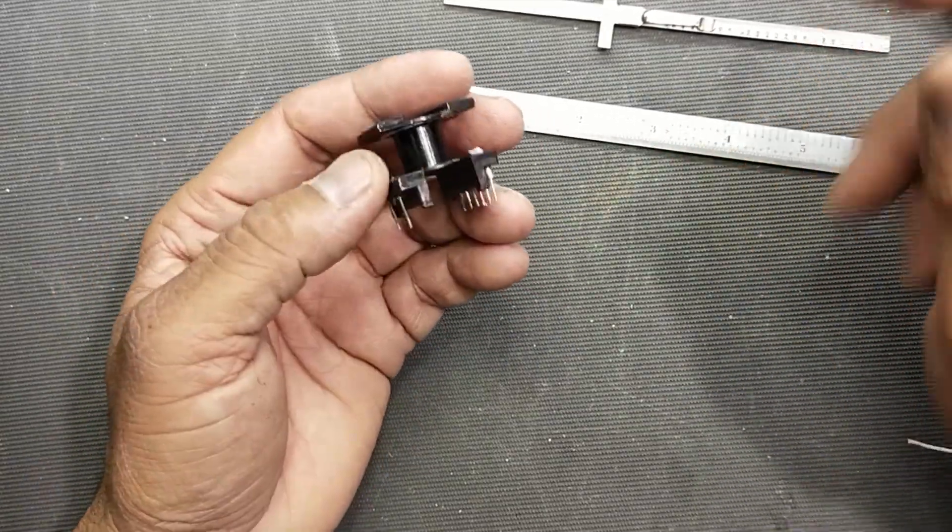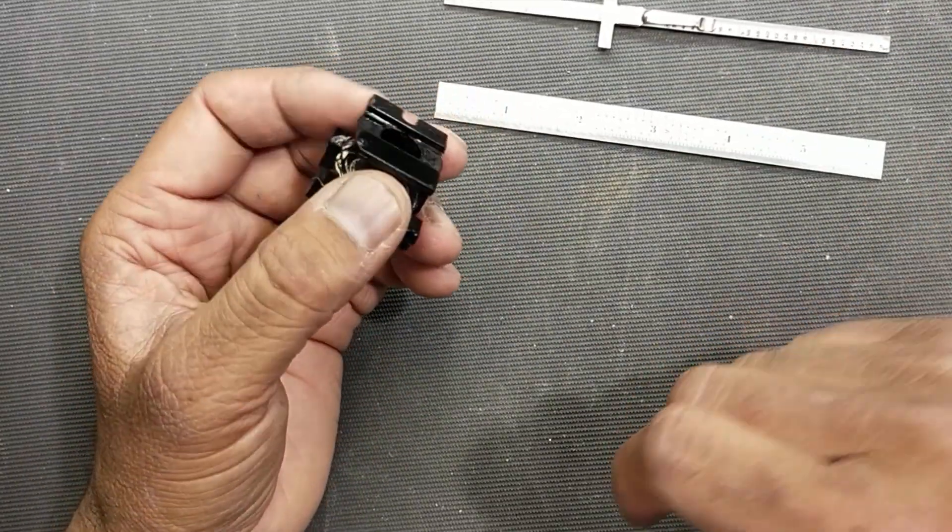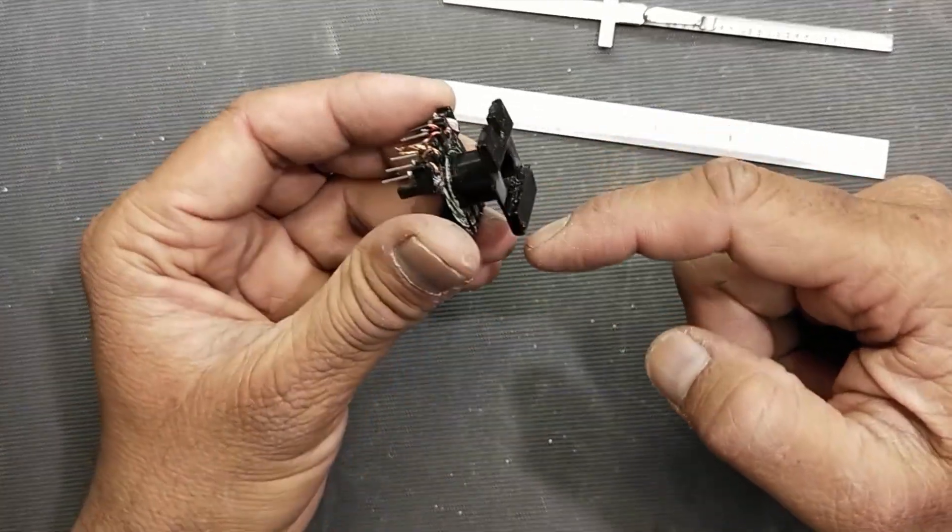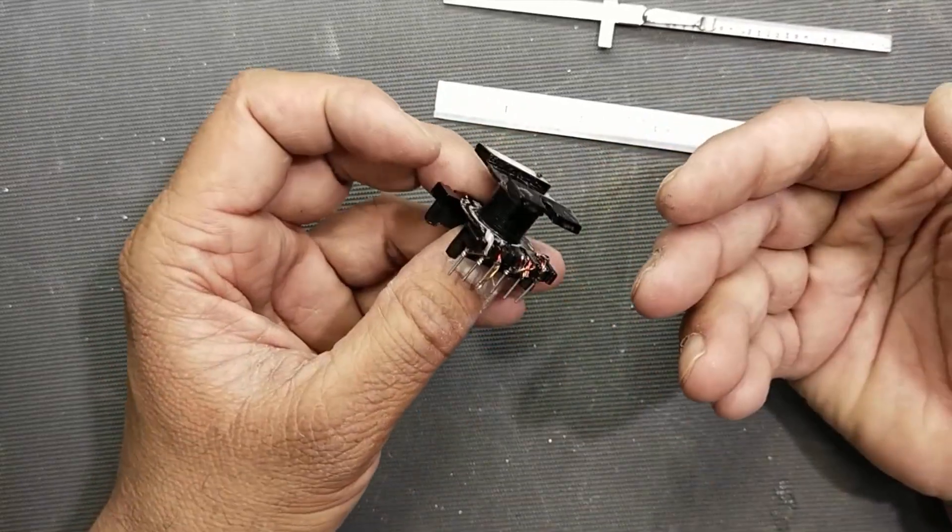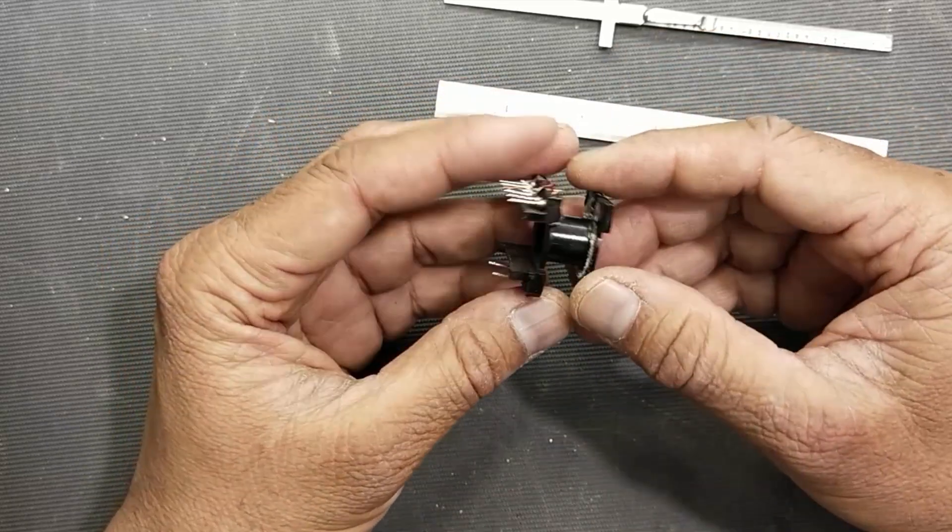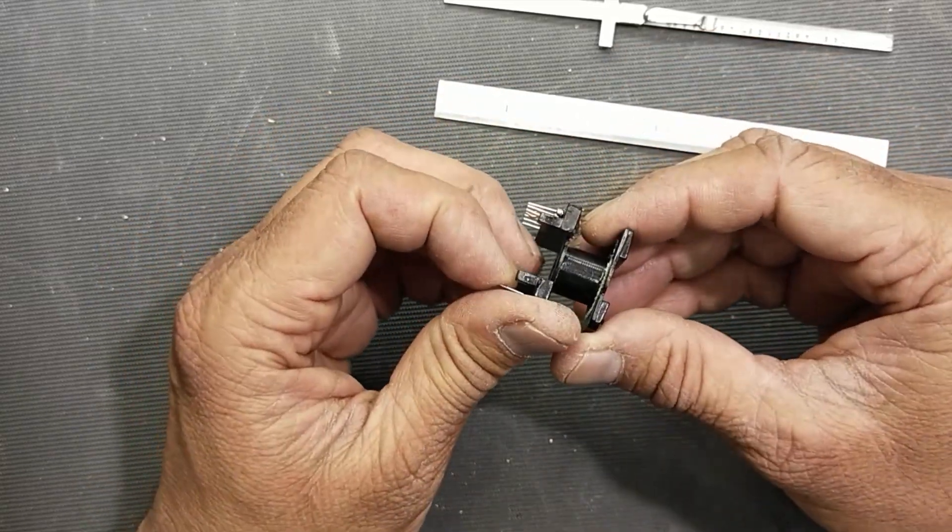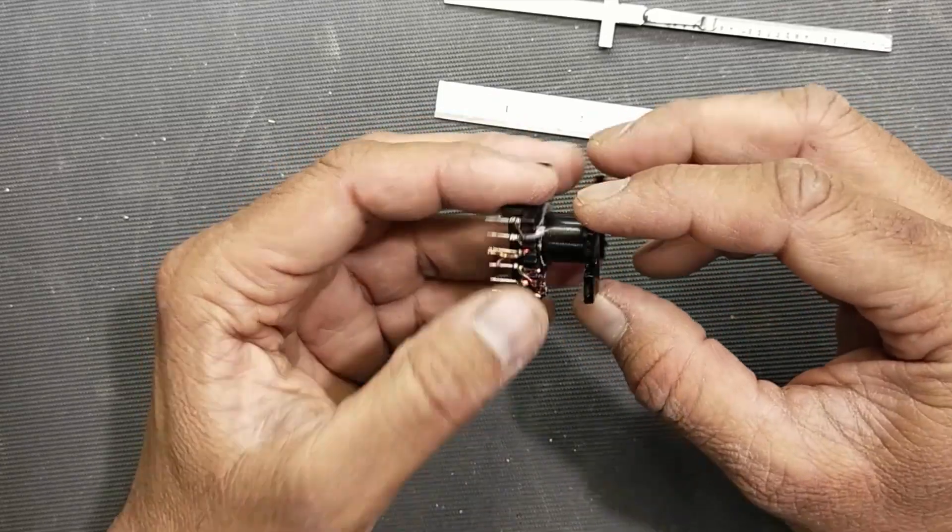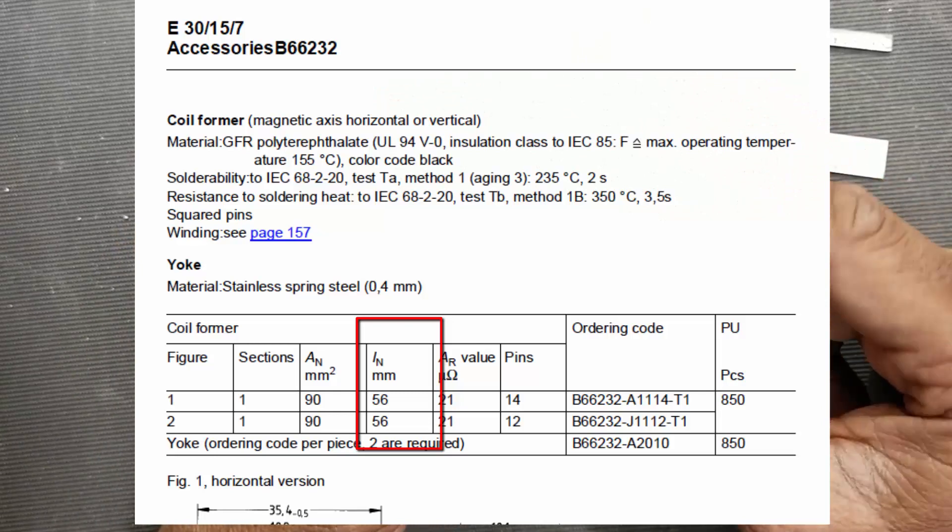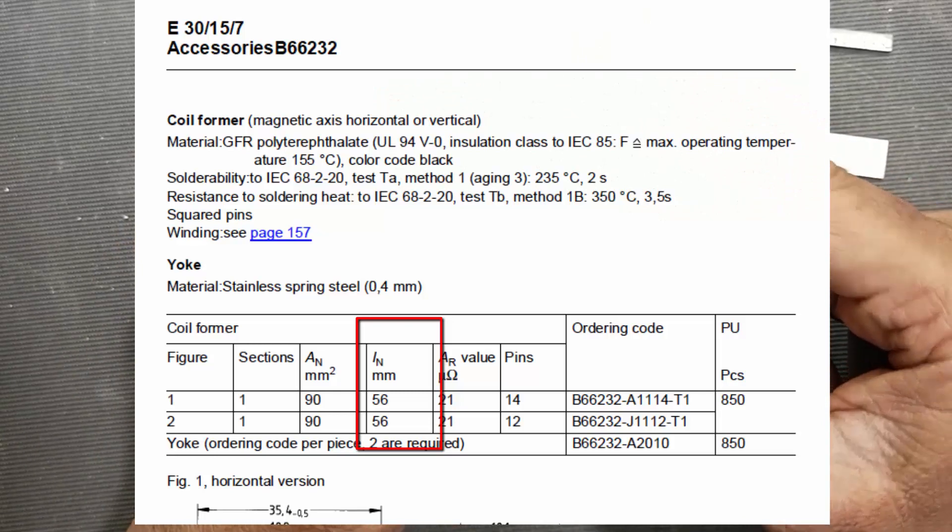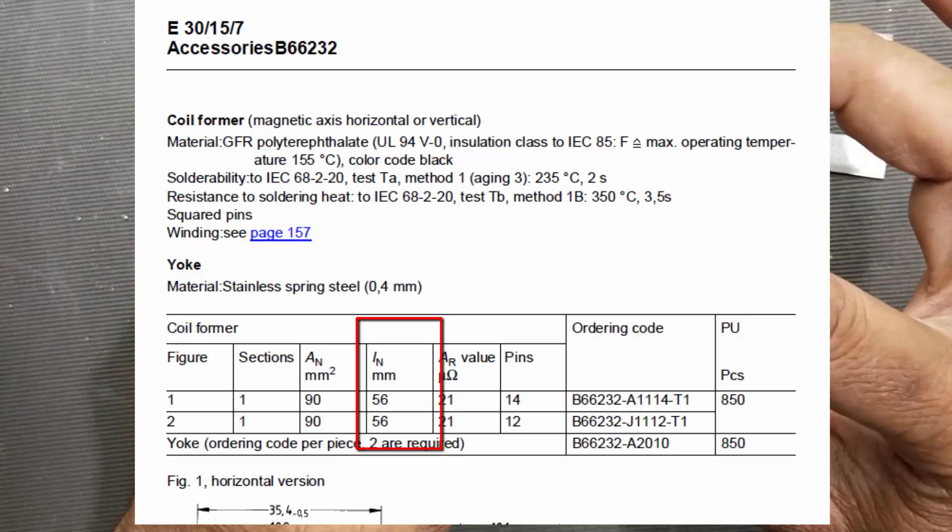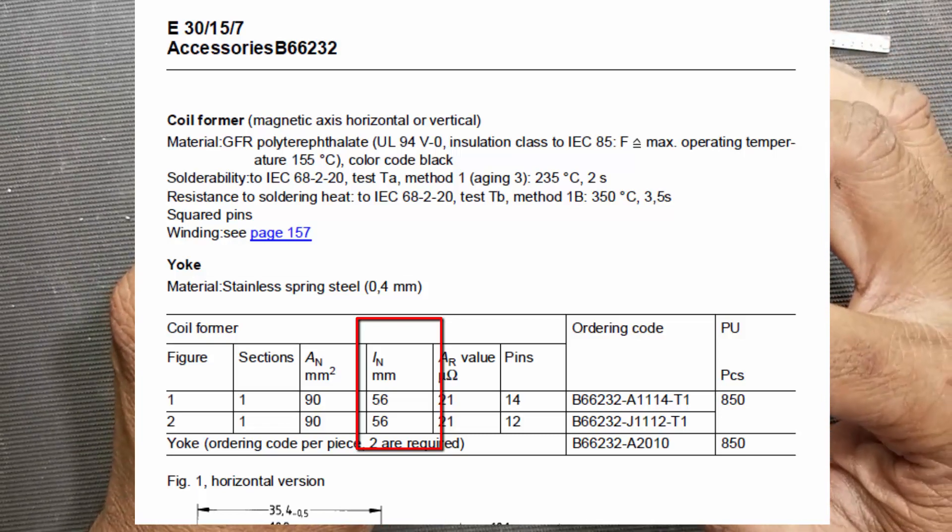Assalamu alaikum warahmatullahi wabarakatuh friends. I received a message from one of my friends asking how to determine the mean length turn (MLT) of a bobbin of a ferrite core when we are winding. We have to use it in calculations. First of all, we can find it in ferrite core data. We have to go to the bobbin and accessories, ferrite core and accessories, and when we go to the bobbin, the coil former, we can find MLT mean length turn.